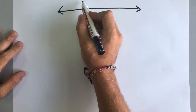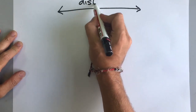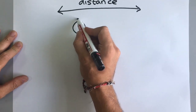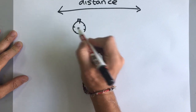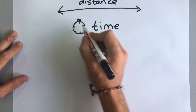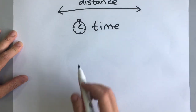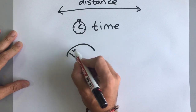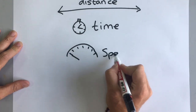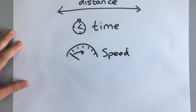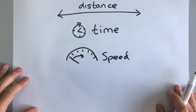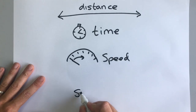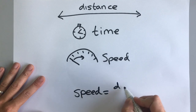First of all we need to know how far something has moved, and we call that the distance. Then we need to know how long it took — we call that the time. And then we need to know how fast it's going, and we call that the speed. These three quantities are related very closely and we can calculate the speed using the equation: speed equals distance divided by time.